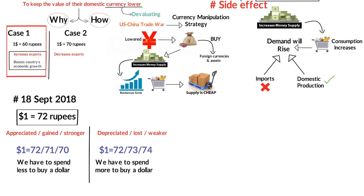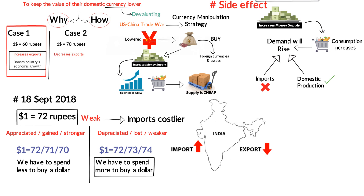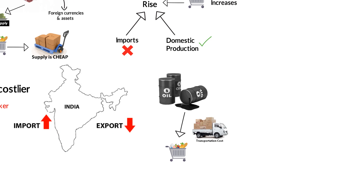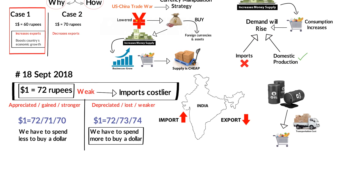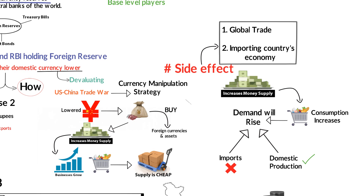Presently, the value of the Indian rupee is higher than its set reference rate, which means the currency is weak. A weak currency makes imports costlier because we have to spend more to buy a dollar. As it is, India imports more than it exports, and some essential imports cannot be cut down — such as oil. Costlier oil means costlier vegetables and groceries, since transportation costs also go up. So all import-based industries and trade suffer.